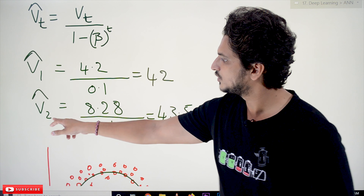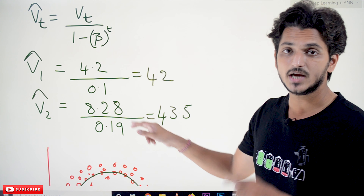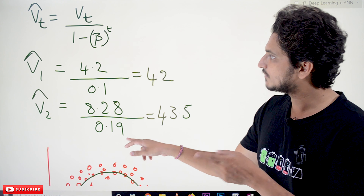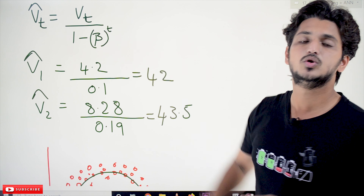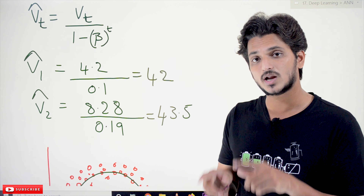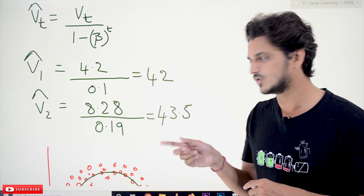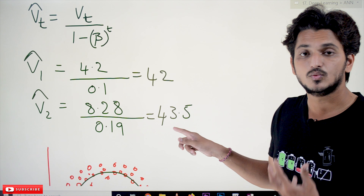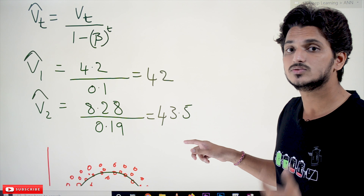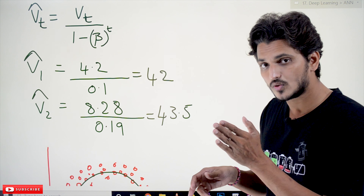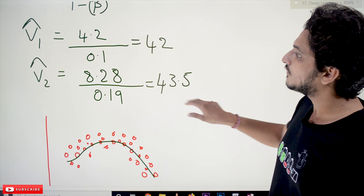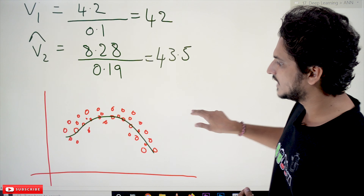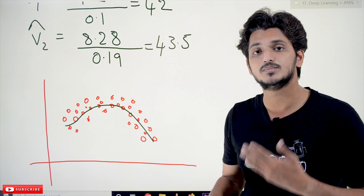Let's check V2_cap. V2 = 8.28, so V2_cap = 8.28 / (1 - 0.9²) = 8.28 / (1 - 0.81) = 8.28 / 0.19 = 43.5. We get the correct average value again. That's why we add this bias correction term to overcome this problem. After applying V1_cap, V2_cap, V3_cap and so on, the graph we get now correctly tracks the average from the beginning — the problem is overcome.